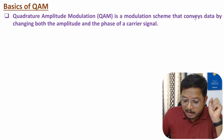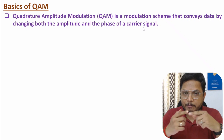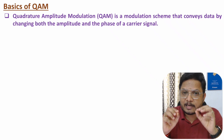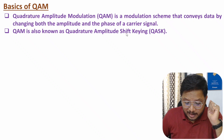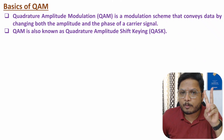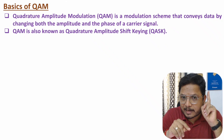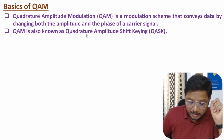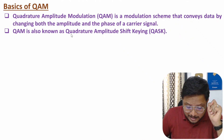In QAM, we convey digital data by changing the amplitude and phase of the carrier signal. QAM is also known as Quadrature Amplitude Shift Keying. The term 'quadrature' means there are two categories of carrier: the in-phase carrier and the quadrature phase carrier. If the in-phase carrier is cos(ωc·t), then the quadrature phase carrier will be sin(ωc·t), and there is a change in amplitude with the carrier to represent digital data.